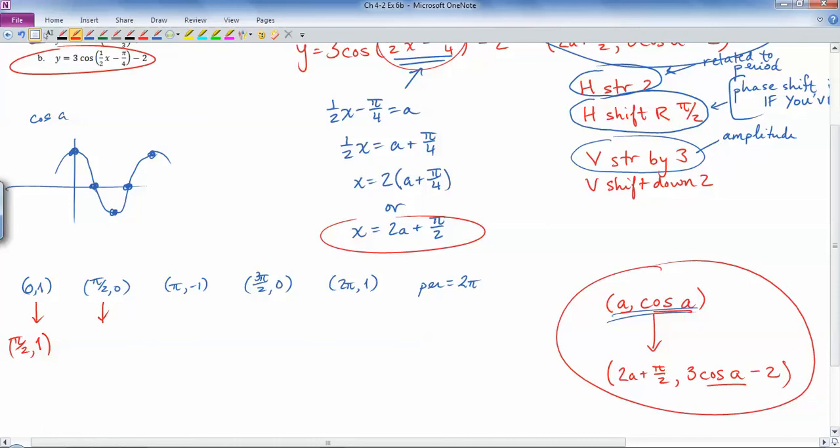Then when I look at (π/2, 0), a is π/2, so if this is π/2, then I get 2 times that plus another π/2, so I get 3π/2. And then when I plug in 0 for cos a, I get 3 times 0 minus 2, so that's -2.